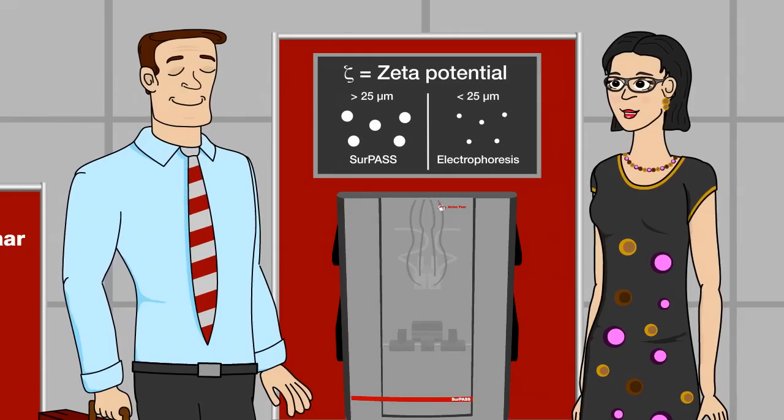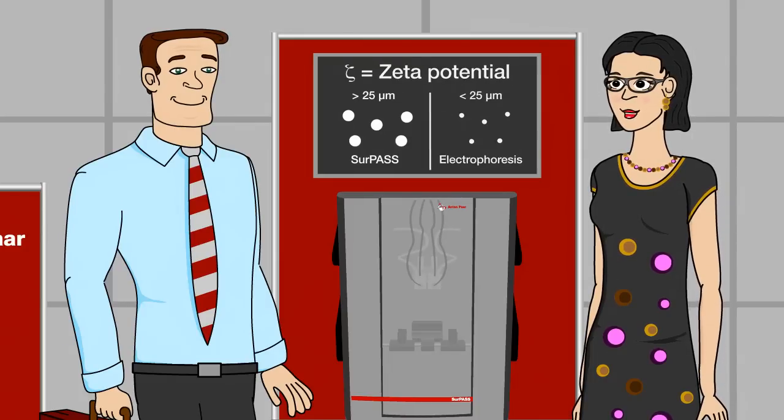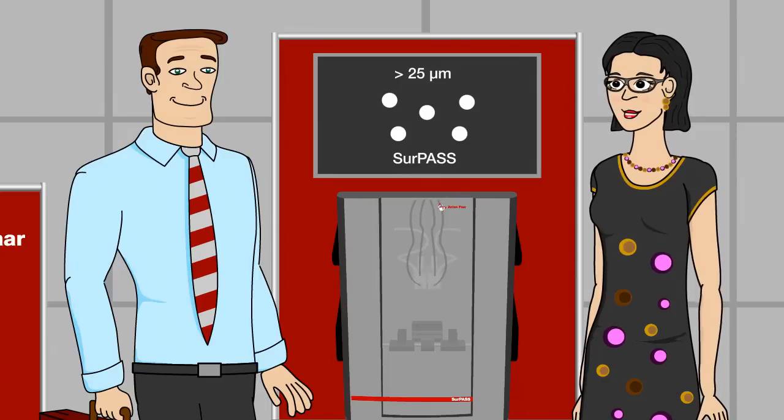This tells you how stable particle dispersions are, for example. The zeta potential is most famous in connection with such particles. So when people hear zeta potential, most of them will think about particles. That's not SURPASS. SURPASS analyzes the zeta potential of macroscopic solid surfaces.